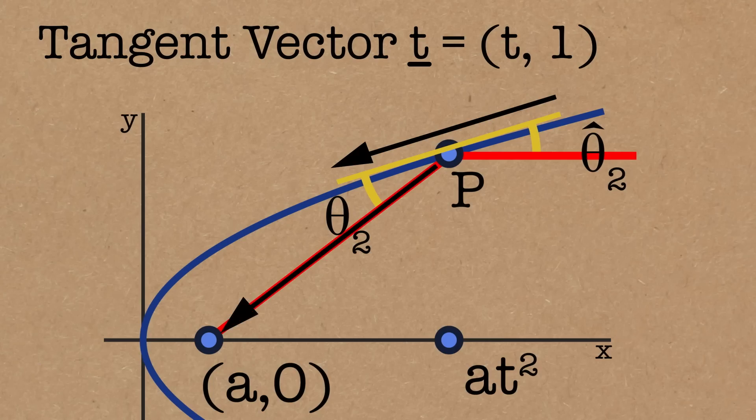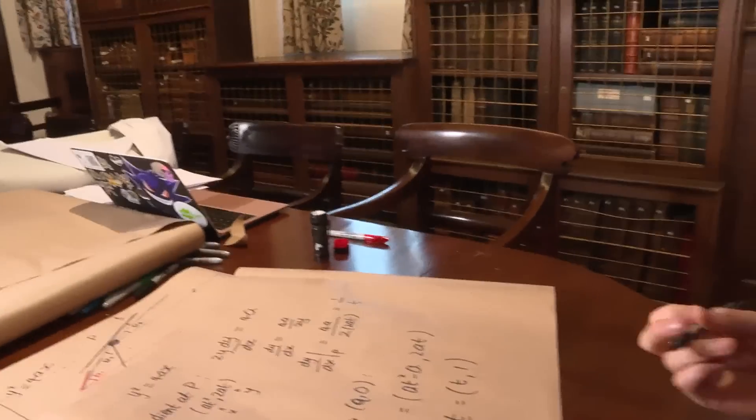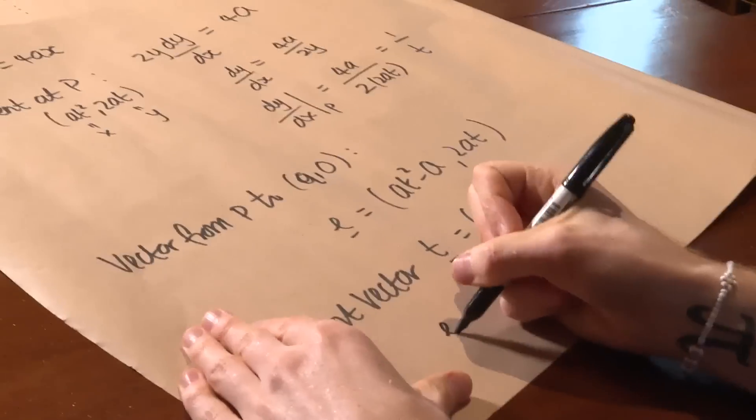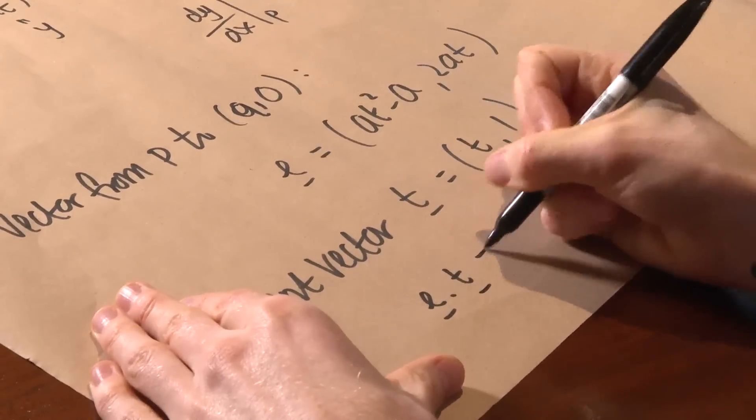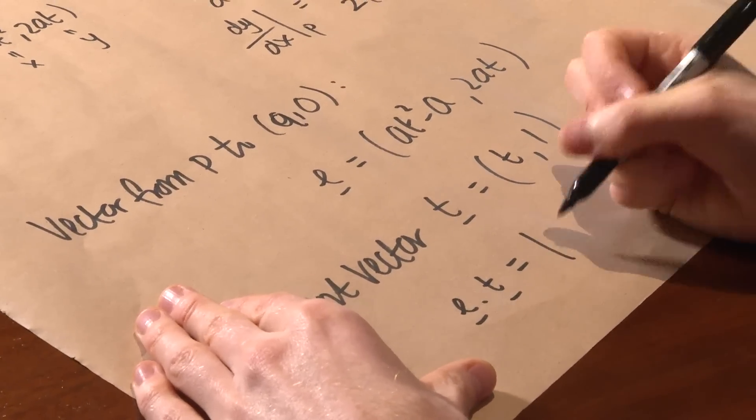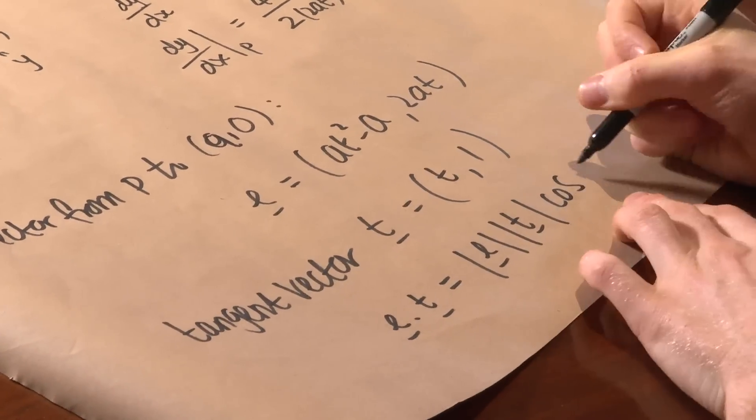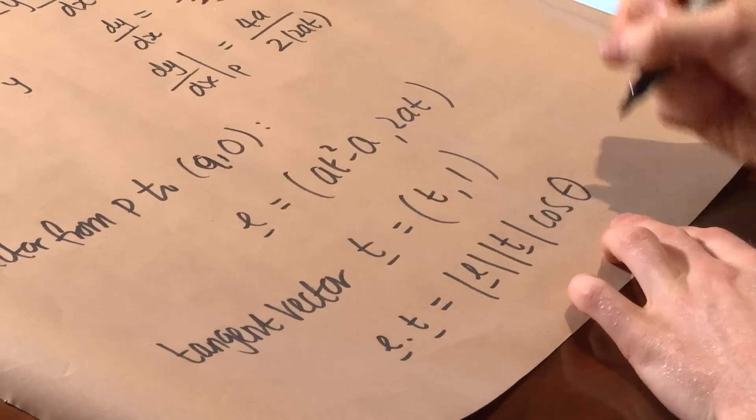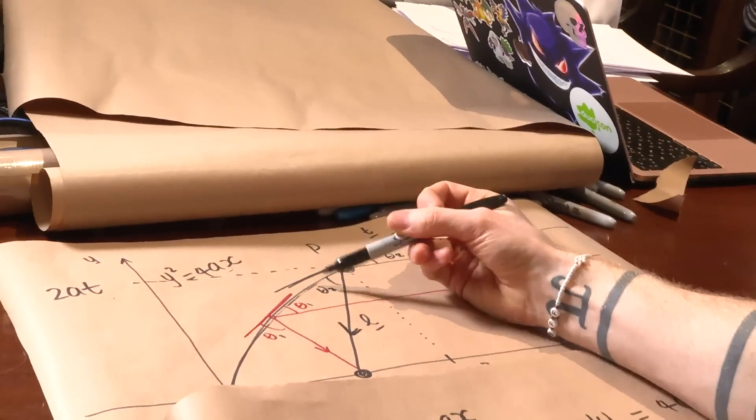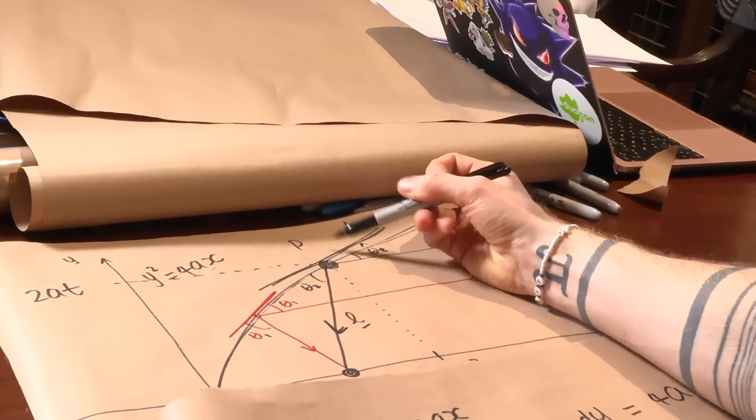So if we take the dot product of those two vectors, it gives us the angle. So if we do L dot t then by definition the dot product is the length of your first vector times the length of your second vector times cos of the angle between them. So that will be theta 2 because these are our two vectors, angle between them there is theta 2. It could of course be the same one up here but it doesn't matter for our purposes, it's the same angle. So we need to sub these in.